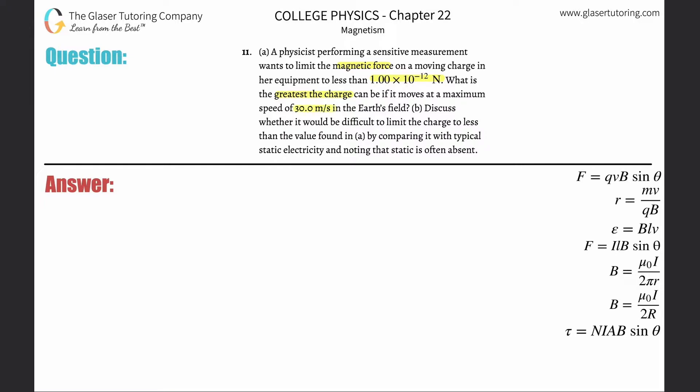At a maximum speed of 30 meters per second in the Earth's field. Okay. So letter A. Basically, we're going to use the formula that the force on a moving charge in a magnetic field will equal the magnitude of the charge of that moving particle multiplied by the velocity of that moving particle multiplied by the strength of the magnetic field multiplied then by the sine of the angle between the velocity vector, or the velocity of that object, that velocity of that moving charge and the magnetic field.